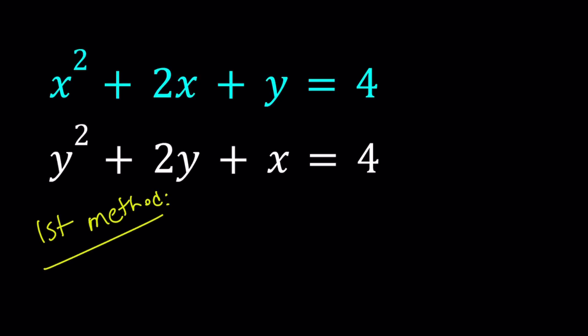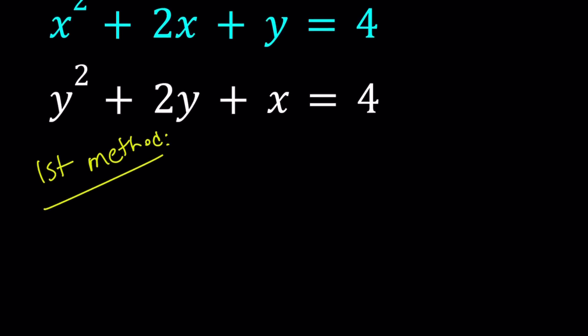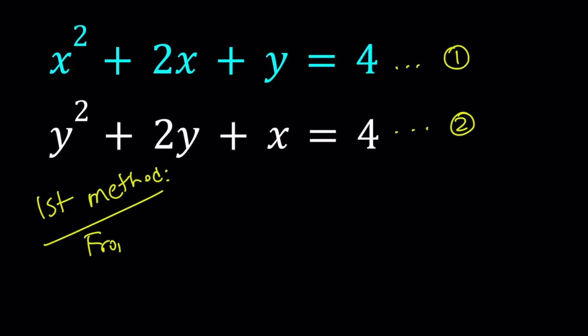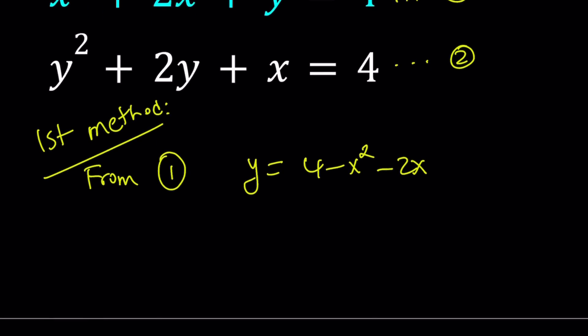My first method is kind of like how not to solve a problem. Let me number these equations, number 1 and number 2. From number 1, I'm going to isolate y. y becomes 4 minus x squared minus 2x. And then I'm going to substitute that into the second equation.